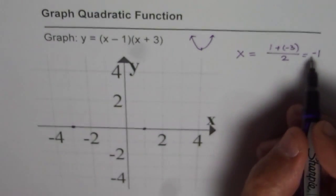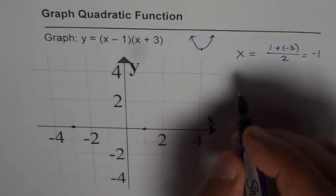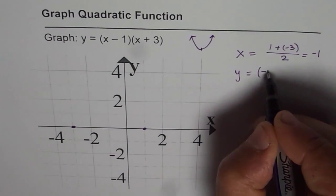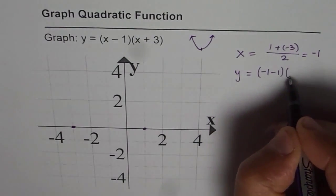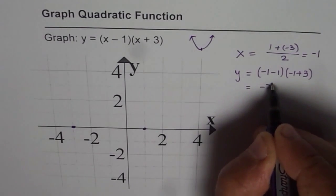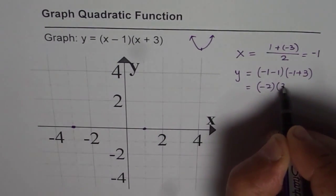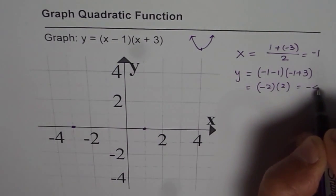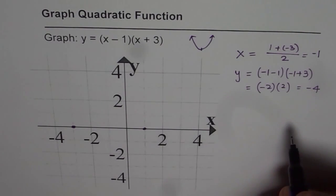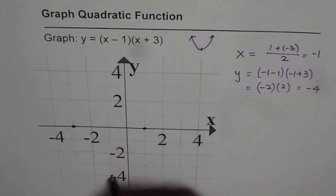Let's find the y value at x equals minus 1. So y equals minus 1 minus 1 times minus 1 plus 3. That gives us minus 2 times 2, which is minus 4. So the vertex is at minus 1, minus 4. Minus 1, minus 4 is the given point to us.